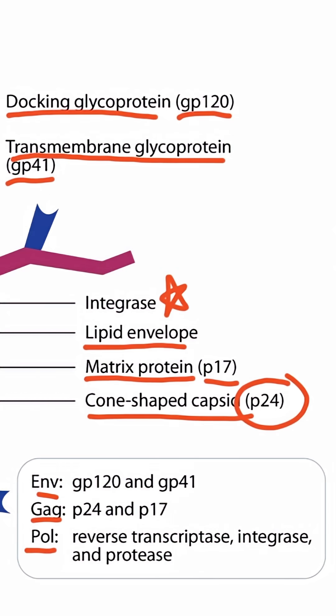If you're feeling overwhelmed right now about all this detail, don't be. The image mnemonic we'll go through in a minute will make this a cakewalk. I just want you to visually appreciate how complicated HIV is and have this picture in the back of your mind as you memorize these details. Now that you understand the structure of HIV, let's move on to discuss the replication cycle.